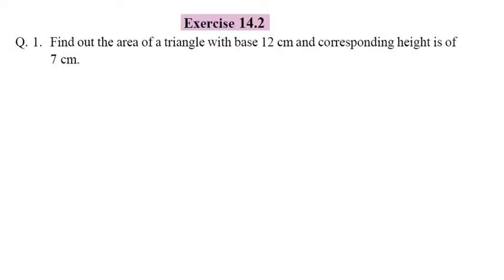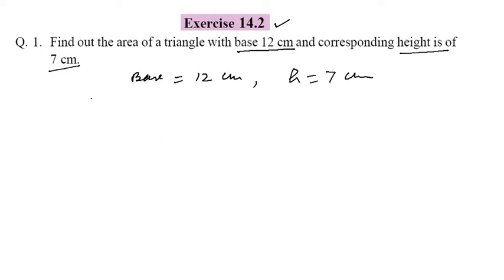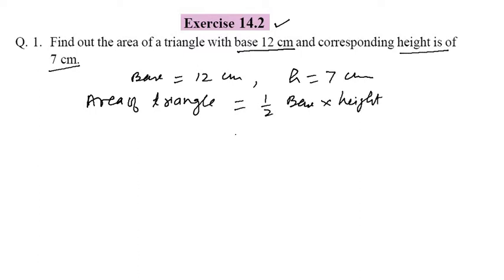Now Exercise 14.2, Question 1: Find out the area of a triangle whose base is 12 centimeters and corresponding height is 7 centimeters. Area of a triangle — apply the formula: it is half into base into height. So, 1 by 2 into 12 into 7 gives 42 centimeter square. That is your answer.